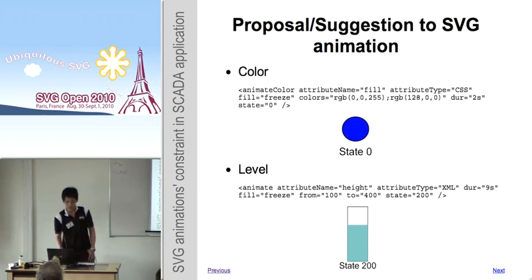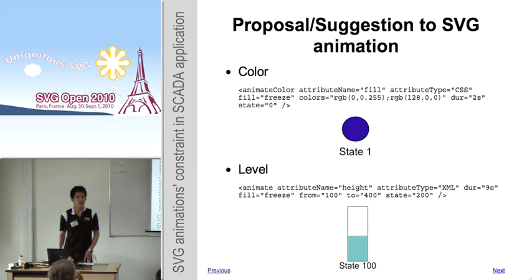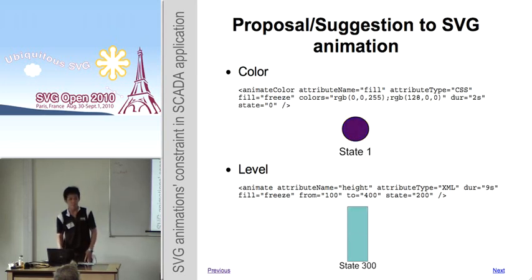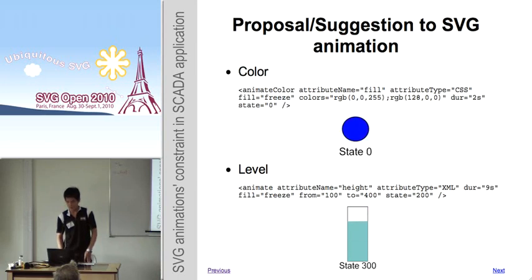Level animation is usually used to indicate the depth of a water tank. The from and to attributes indicate the range of minimum and maximum values this object can reach. The state attribute of this animation takes a number between from and to to indicate the current level of the water.